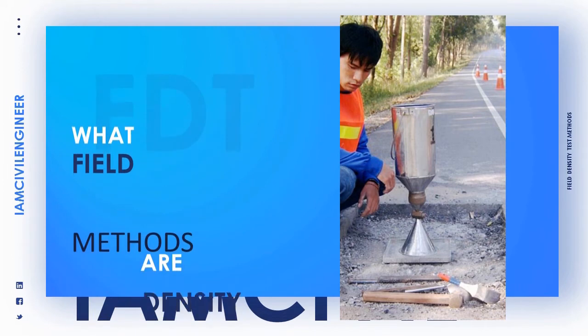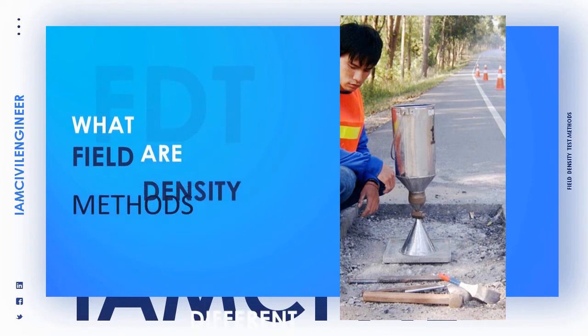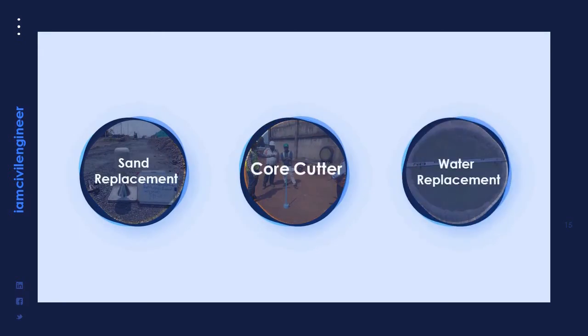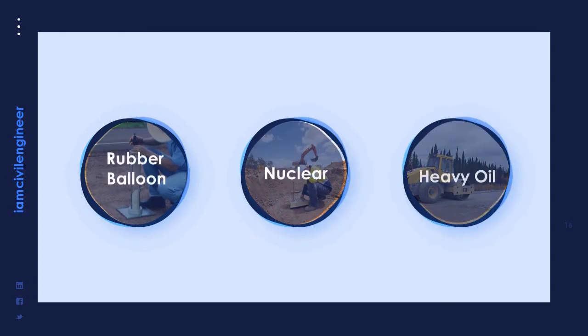Let's see what the different methods of field density test are. Three of the most common methods are the sand replacement (or sand cone) method, the core cutter method, and the water replacement method. Some other methods are also used for specific purposes, like the nuclear method, rubber balloon method, and heavy oil method.